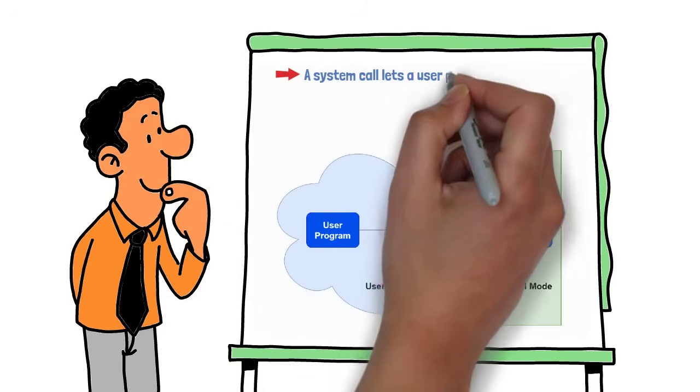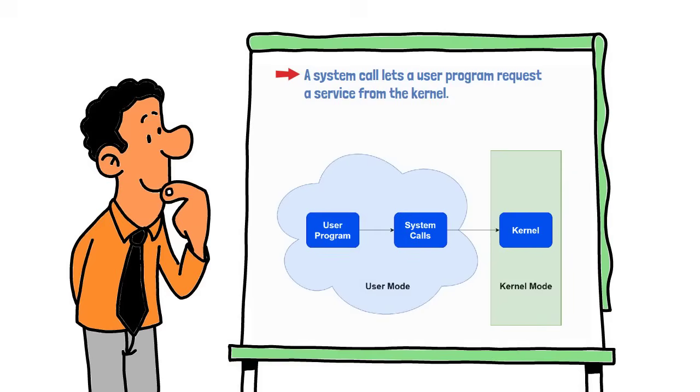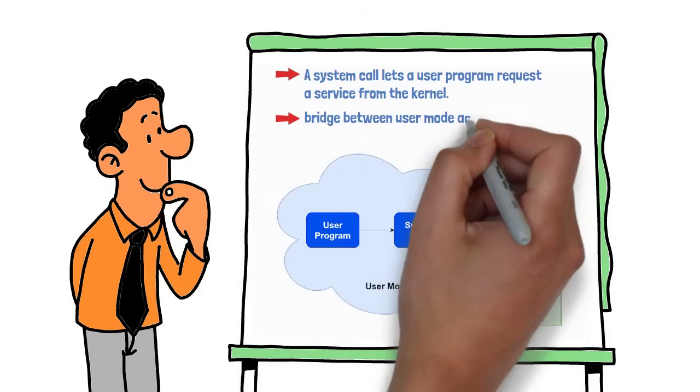A system call lets a user program request a service from the kernel. It's the bridge between user mode and kernel mode.